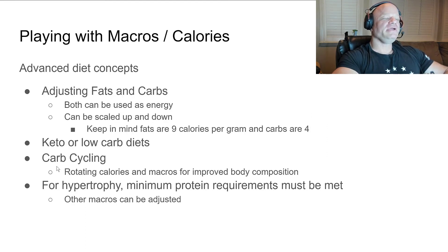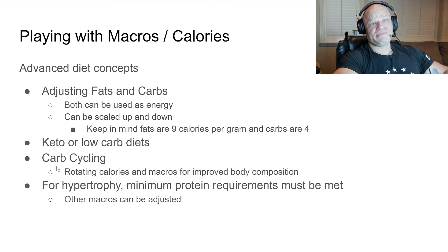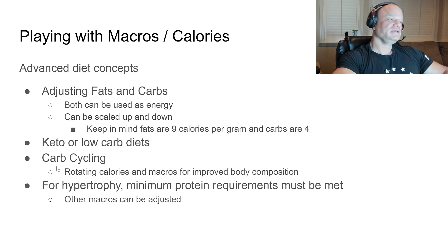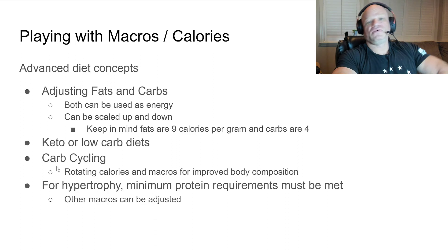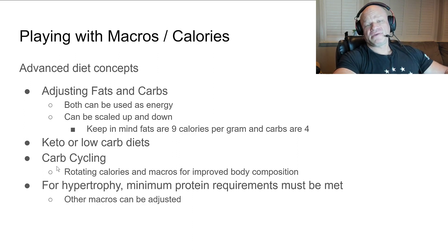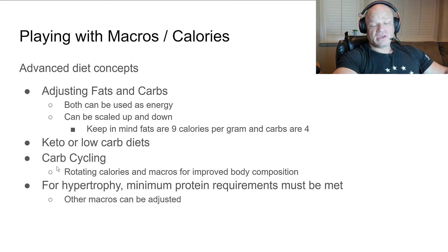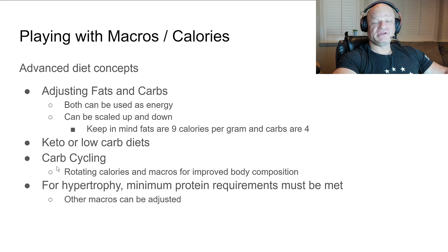Playing with your macros: if you want to optimize body composition, you can manipulate your macros without changing total calories. Protein usually stays static, but for example with carb cycling — which is what I do — on the high carb day we pull protein down because a high carbohydrate state with high insulin levels is a muscle-protective state, so you don't need as much protein. You can cut protein back and put more calories into carbohydrates.